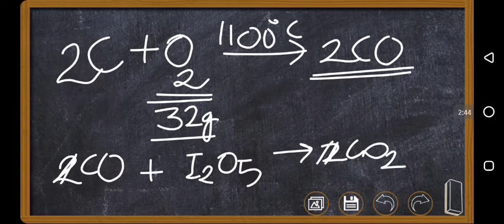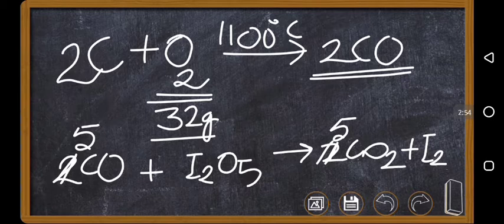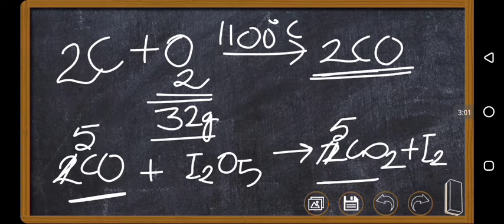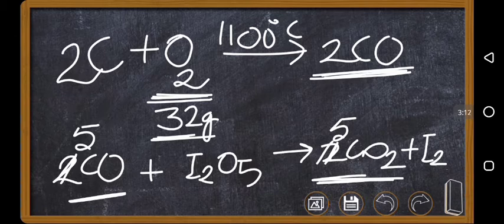Now you can see CO reacts with I2O5. So here five oxygens are there, let's take 5CO, it becomes 5CO2 plus I2. This is for balancing purposes, but use your common sense and say 5CO is converted to 5CO2, which means 2CO will be converted to 2CO2. So O2 which is 32 grams is converted to 2 moles of CO2.